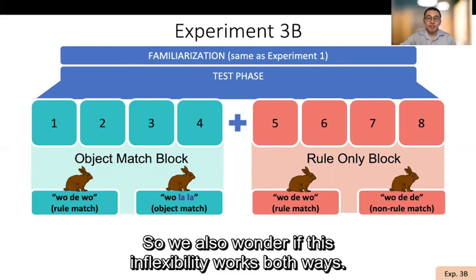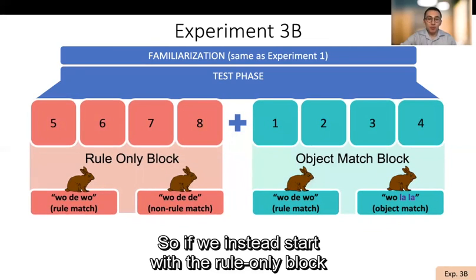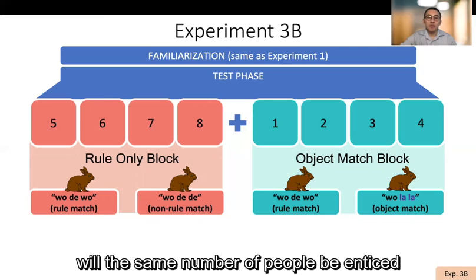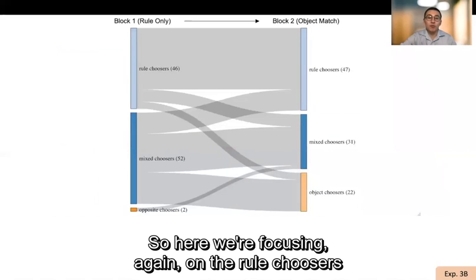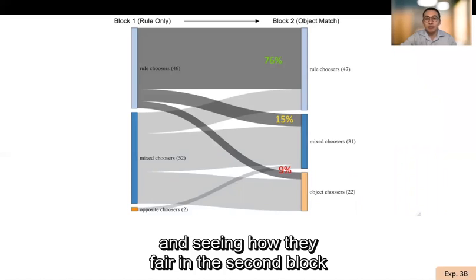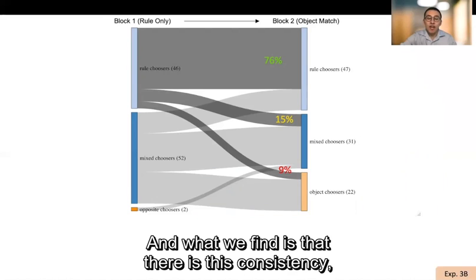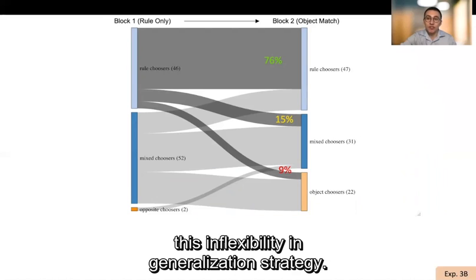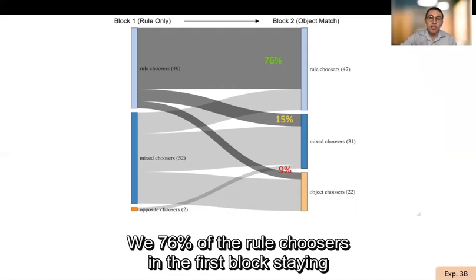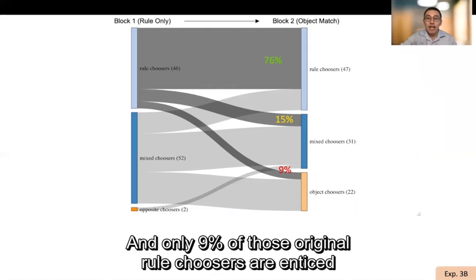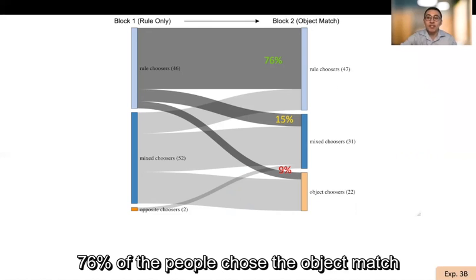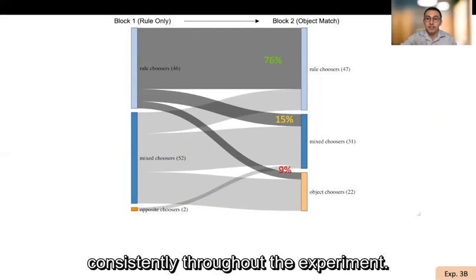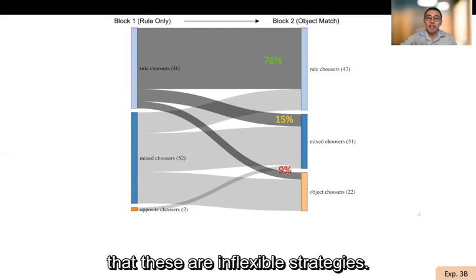So we also wonder if this inflexibility works both ways. So if we instead start with the rule only block and then change to an object match block, will the same number of people be enticed by the object matches as in experiment one, or will people stick to that rule-based match? So here we're focusing again on the rule choosers and seeing how they fare in the second block once the object match now becomes available as an option. And what we find is that there is this consistency, this inflexibility and generalization strategy. We have 76% of the rule choosers in the first block staying with the rule-based generalizations in that second block. And only 9% of those original rule choosers are enticed to switch generalization strategies and choose that object match consistently. And remember, this is only 9% versus in experiment one, 76% of the people chose the object match consistently throughout the experiment. So that is a strong indication that these are inflexible strategies.